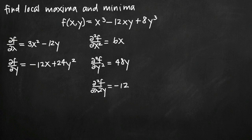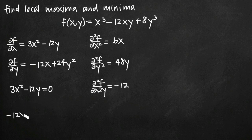Now that we have all our first and second-order partial derivatives, the next step is to find critical points of this three-dimensional function. We find critical points by setting the first-order partial derivatives equal to zero: 3x squared minus 12y equals zero, and negative 12x plus 24y squared equals zero.